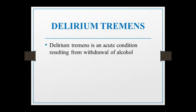Delirium tremens occurs in those who are alcohol-dependent for a long period of time. If they had their last drink two to five days ago and have since stopped taking alcohol, this is a withdrawal condition. It is an acute condition and that is why this psychiatric emergency — delirium tremens — arises. It is basically fatal due to the shaking of the body and confusion state.